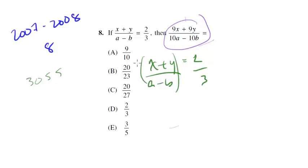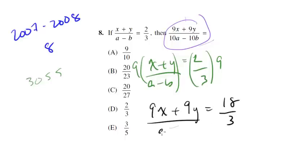Let me multiply both sides by 9, because if I do that, I'm not breaking any rules - I'm doing the same thing to both sides, and I'm going to get the top to look like what I want. So I get (9x+9y)/(a-b) equals 18/3.